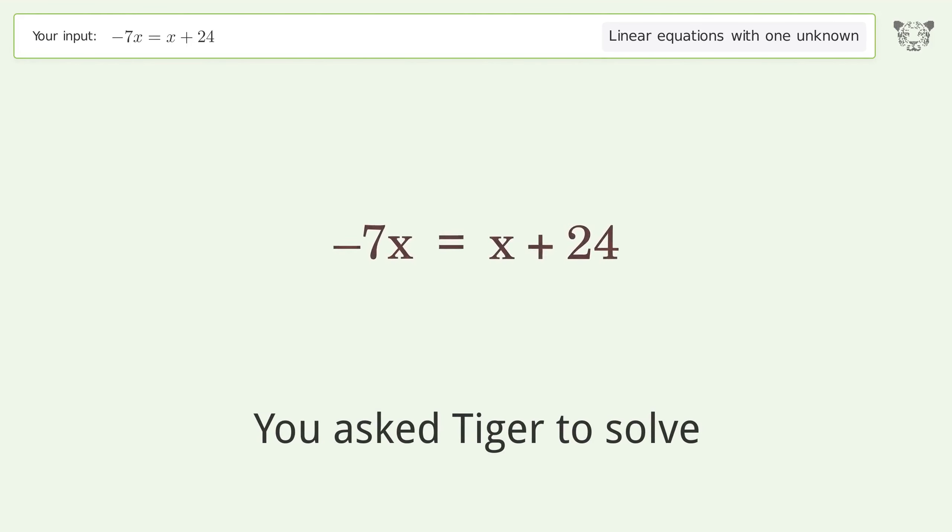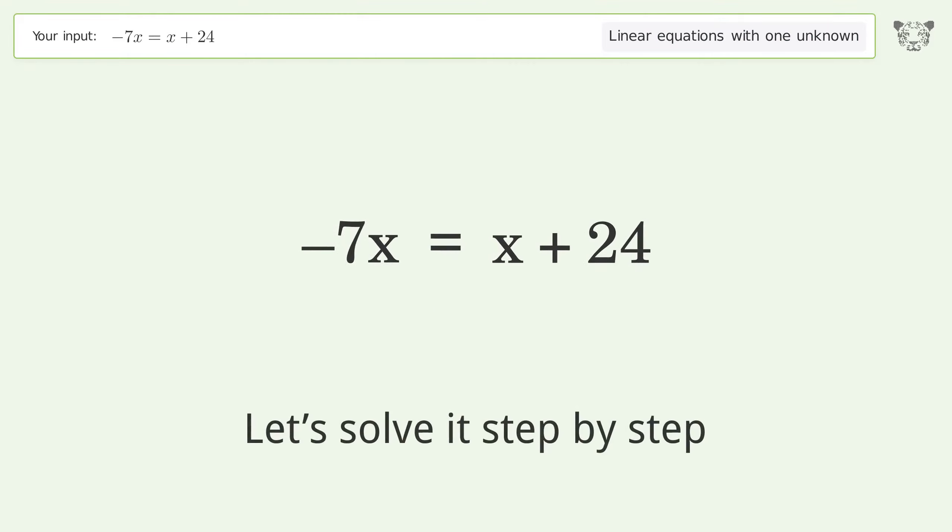You asked Tiger to solve this linear equation with one unknown. The final result is x equals negative 3. Let's solve it step by step.